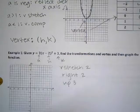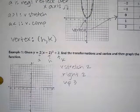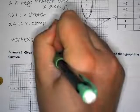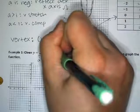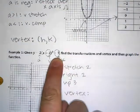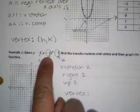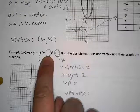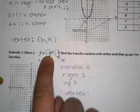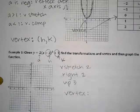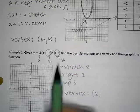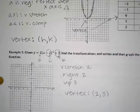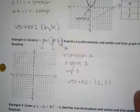Those are the transformations. Now we can say what the vertex is. The vertex is based on the H and K values. We take the opposite of the H number — it says negative 2, so we use positive 2 for our vertex. Then we take the K number exactly as it is. So vertex is (2, 3). Let's go ahead and graph our vertex at positive 2, positive 3.